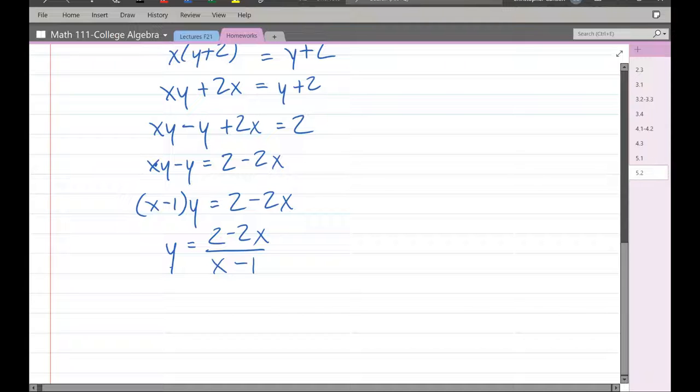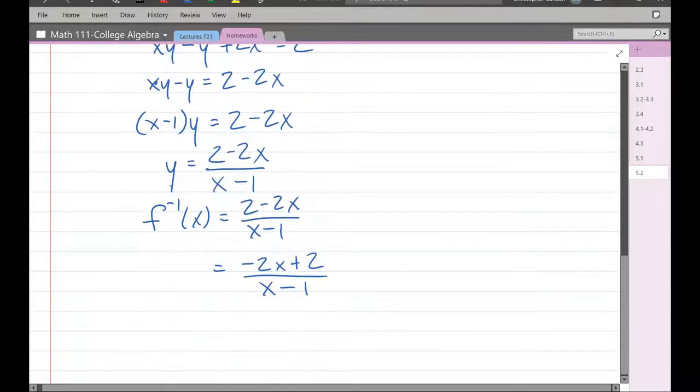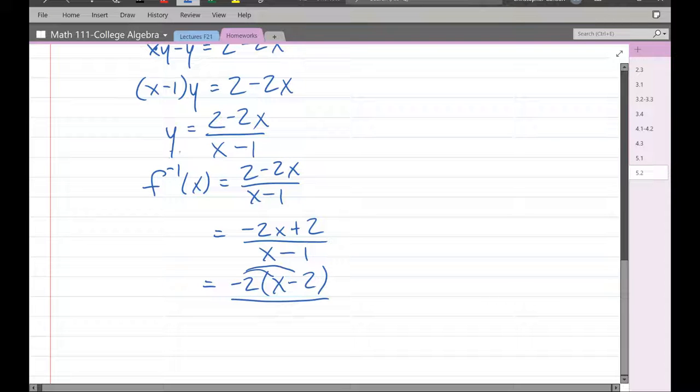So we have now just y times the x minus one. So divide by x minus one. And this is a just fine answer right here. This is f inverse of x. I am going to do a little bit of algebra cleanup. I like my x term to be first, not second. So I'm going to go ahead and reorder this. Negative 2x plus 2 divided by x minus one. And I'm going to factor out a negative two in the numerator.